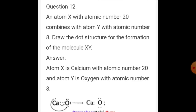Question number 12: the atom X with atomic number 20 combines with the atom Y with atomic number 8. Draw the structure of the formation of the molecule XY. Atom X with atomic number 20 is calcium. Atom Y with atomic number 8 is oxygen.